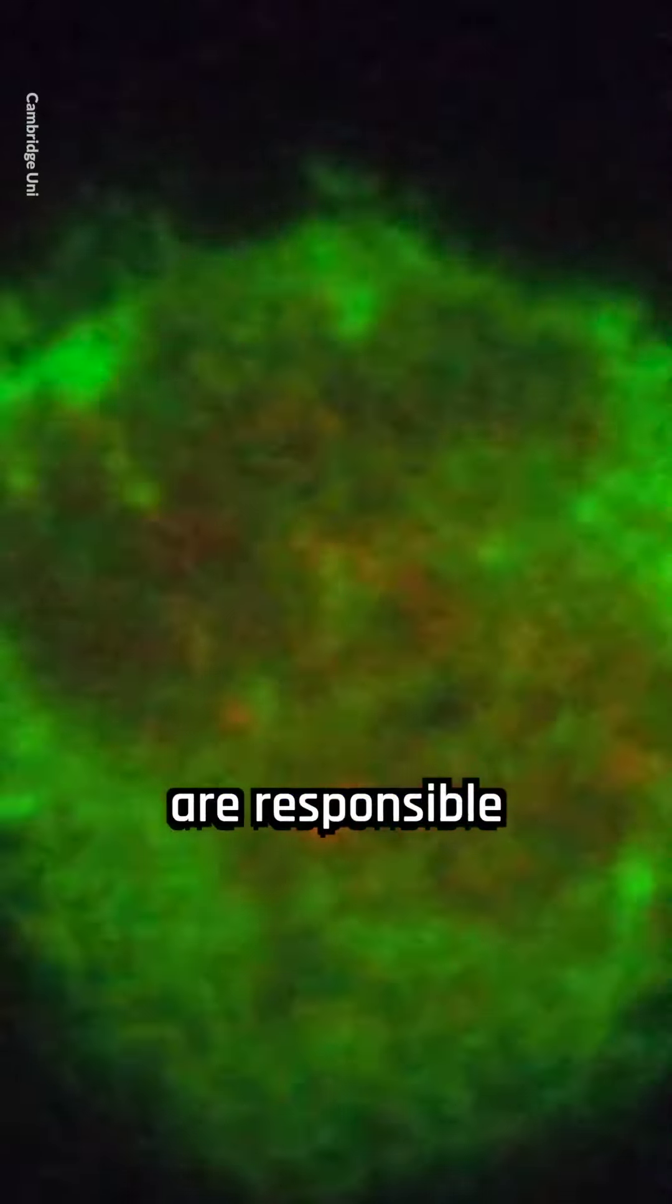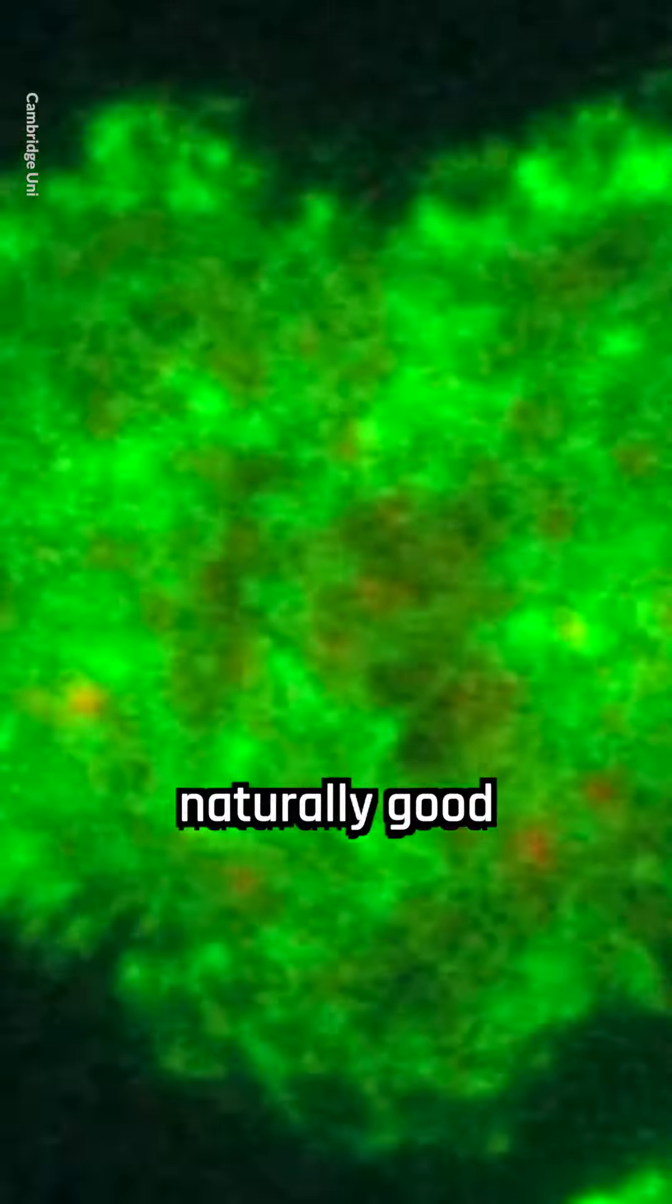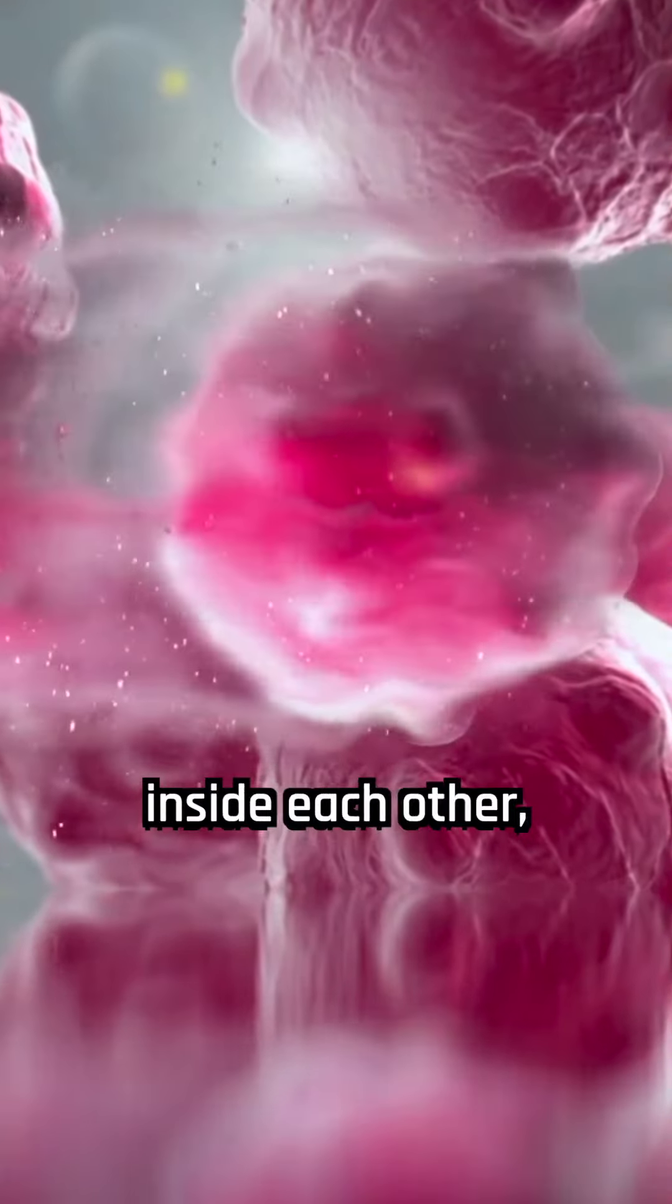Killer T cells are responsible for the immune response to tumors, but cancer cells are naturally good at avoiding detection and can mutate to evade the immune system. By hiding inside each other,